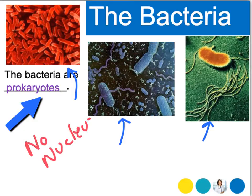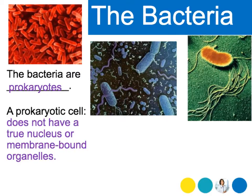It still has DNA, but that DNA is not enclosed in a nucleus. So here we have the definition for a prokaryotic cell: it does not have a true nucleus or membrane-bound organelles — things like mitochondria, endoplasmic reticulum, and ribosomes. Bacteria does not have those.